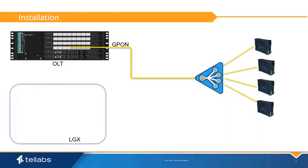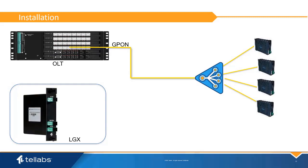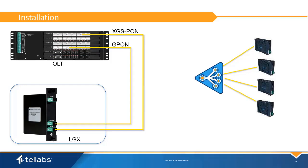Adding an additional wavelength involves the following steps. Mount the combiner in an LGX enclosure between the existing splitter and the OLT. Cable up the new XGS-PON OLT laser to the combiner input. Unplug the existing GPON fiber from the splitter and plug it into the combiner input. Plug in a new fiber going from the combiner common output to the input of the splitter.